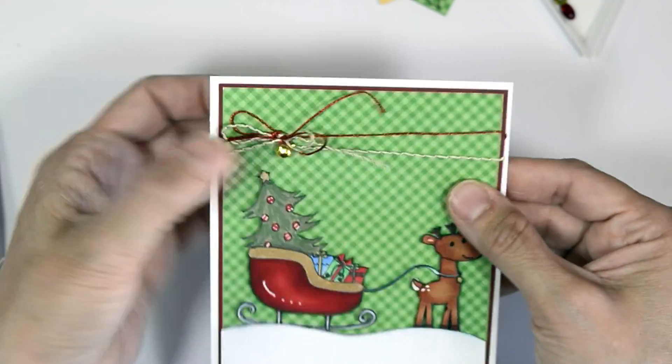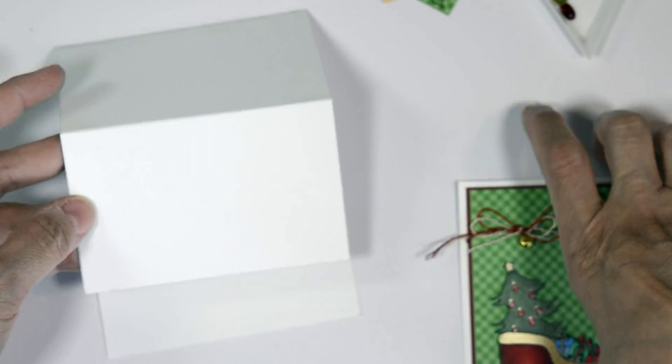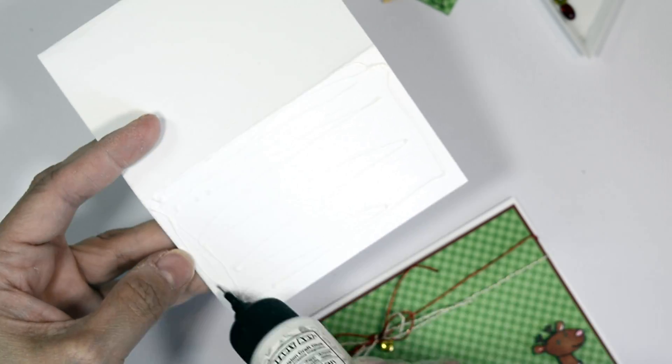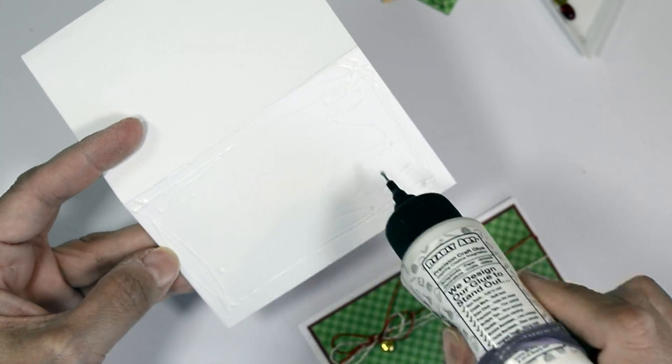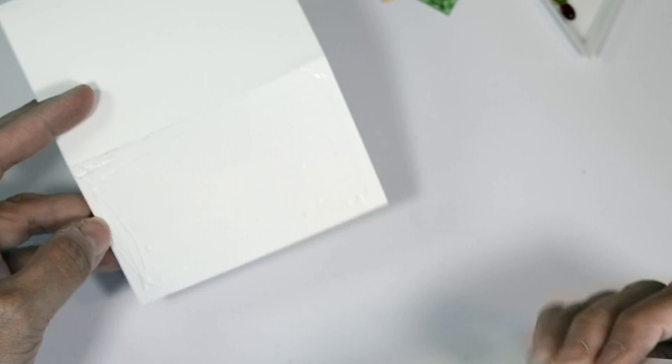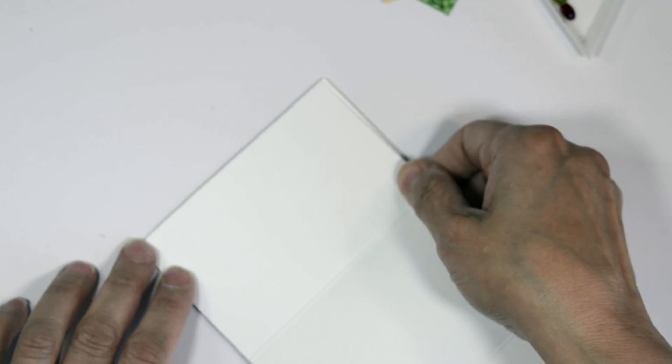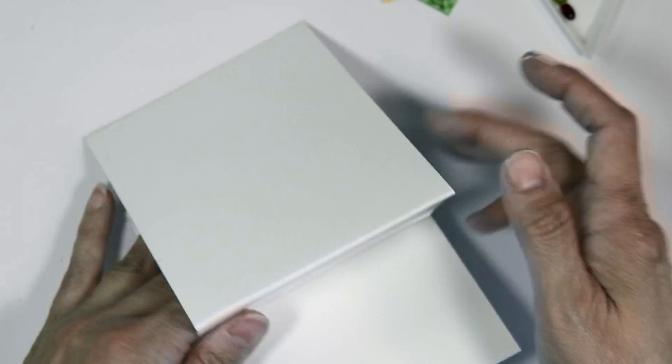Alright, so here, let me see, you can hear the little bell jingling. Let me see if I can get it to jingle for you. It's kind of hard. There you go. Okay, so now I'm going to adhere this card panel to my card base. We're only putting glue on the one lower portion. So we're going to adhere that to the card panel. I fold it over so you can see just that panel.